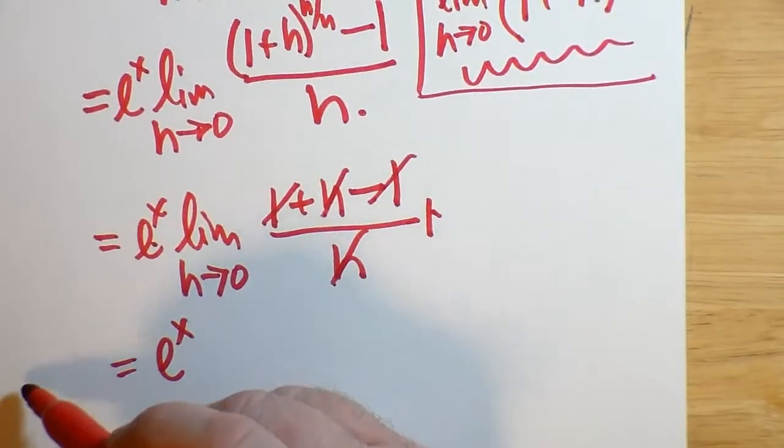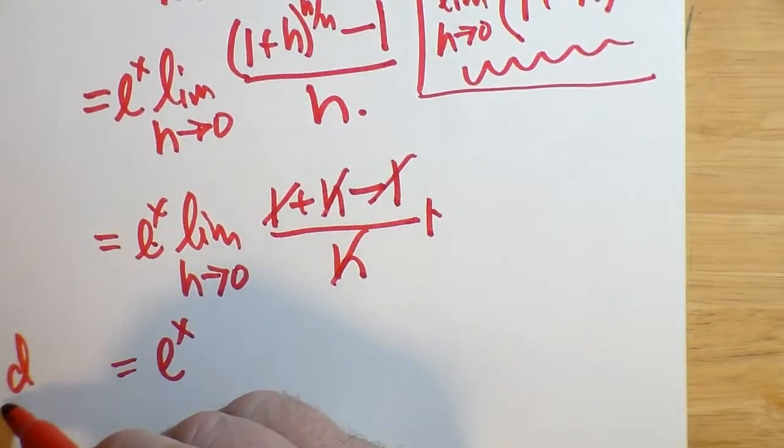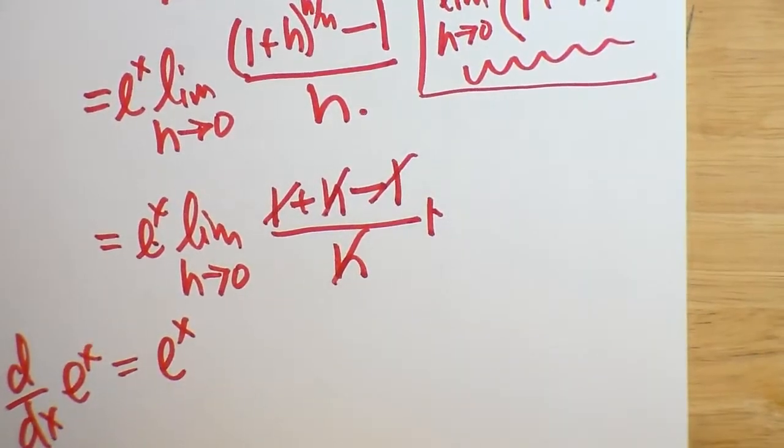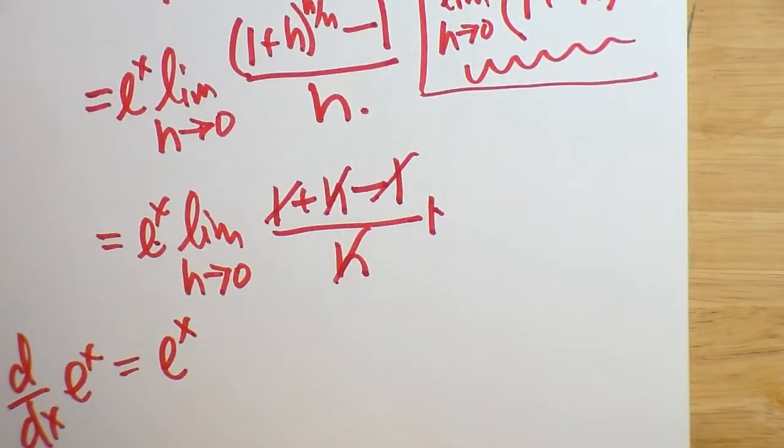So we're saying, therefore, the derivative, d by dx, of E to the x is E to the x. It is, by point of fact, its own rate of change.